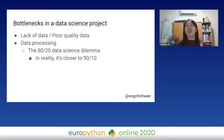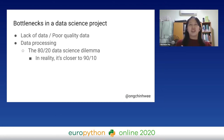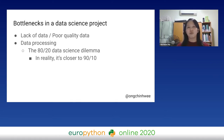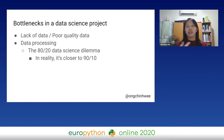But when you're dealing with a real-life data science project, it doesn't look like your Kaggle dataset or nicely cleaned bootcamp problems. In the real world, a major bottleneck is the lack of data — but usually it will be the problem of poor quality data, which means you need to put in more effort into data processing.